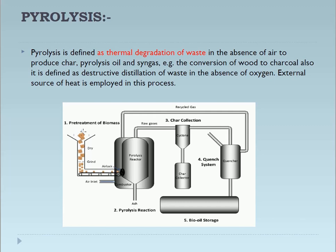Here you can see the pyrolysis reactor diagram. There is pretreatment of biomass, then the pyrolysis reactor with an air inlet, a combustor, recycled gas, raw gases, and a char collector. There is also a quench system and bio-oil storage at the bottom. This is the thermal degradation of waste to produce char, pyrolysis oil, and syngas.